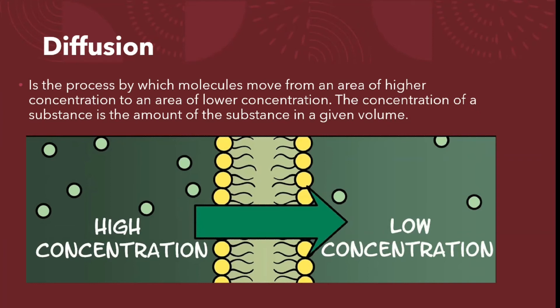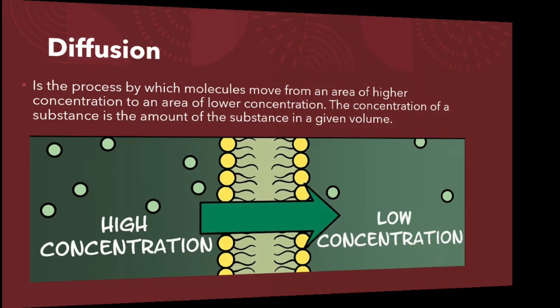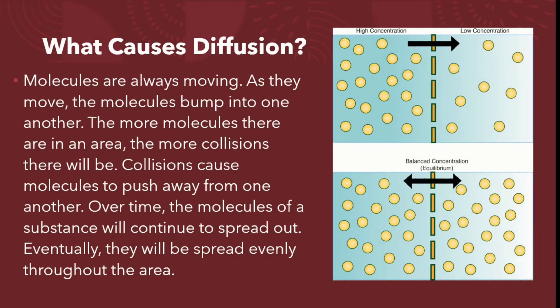Diffusion is the process by which molecules move from an area of higher concentration to an area of lower concentration. The concentration of a substance is the amount of the substance in a given volume. Molecules are always moving; as they move, the molecules bump into one another. The more molecules there are in an area, the more collisions there will be, causing molecules to push away from one another. Over time, the molecules of a substance will continue to spread out until they are spread evenly throughout the area.